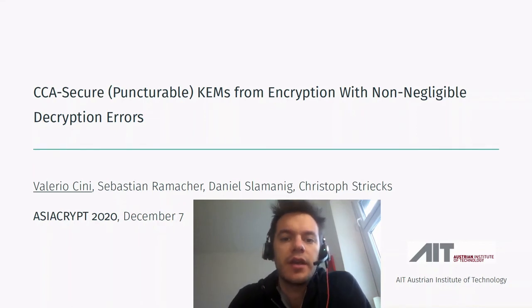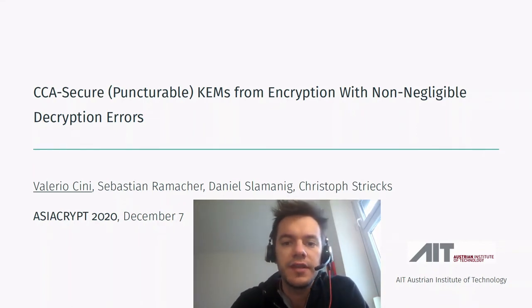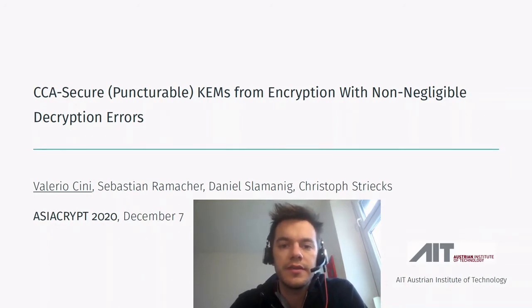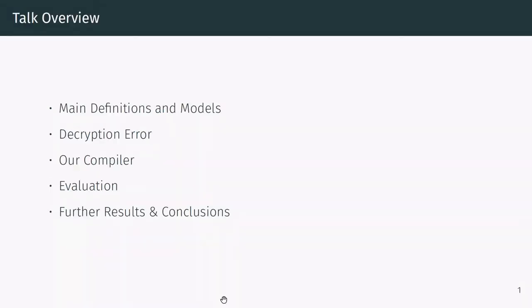Hi, my name is Valerio and I will be talking about how to obtain CCA secure KEMs from encryption with non-negligible decryption error. This is a joint work with Sebastian Ramacher, Dennis Lamaning, and Christoph Strix. I will start by briefly recalling the main definitions and security models used in public key cryptography and discussing the role played by decryption error in this context. I will then present the compiler that we have constructed and the main ideas behind it. Finally, I will show its evaluation performance with respect to the NIST submissions and shortly talk about further results you can find in the paper.